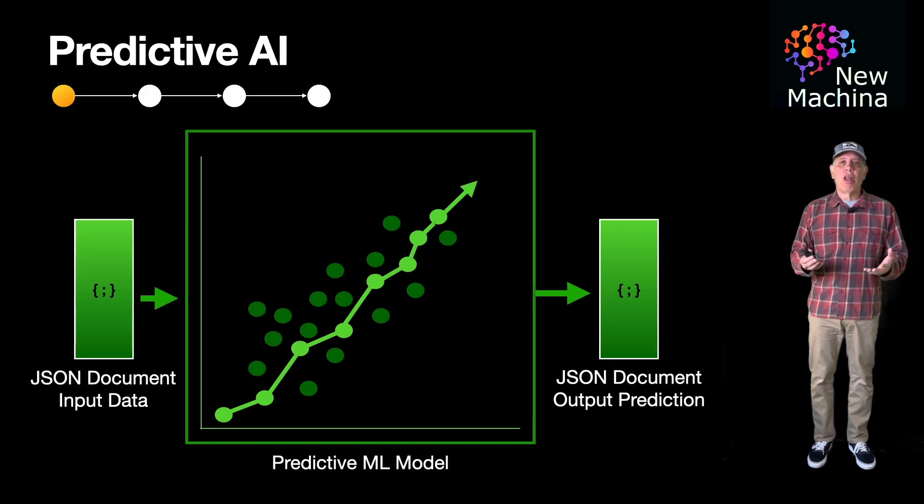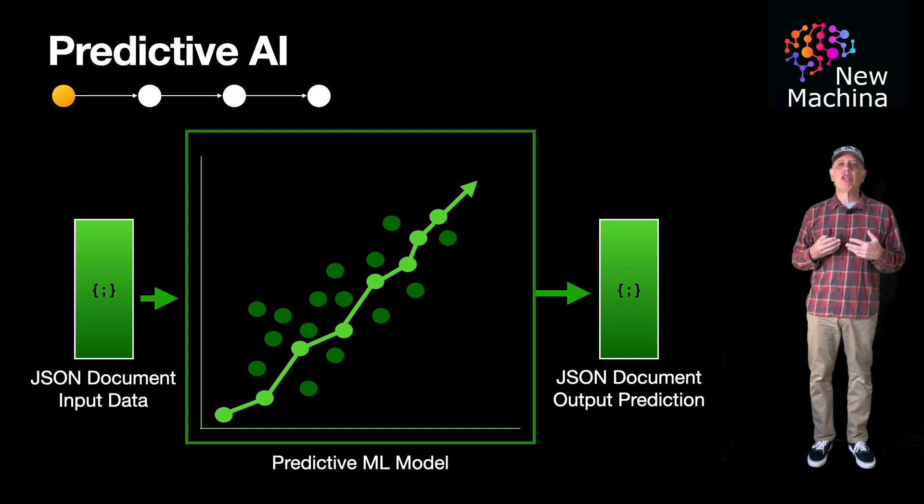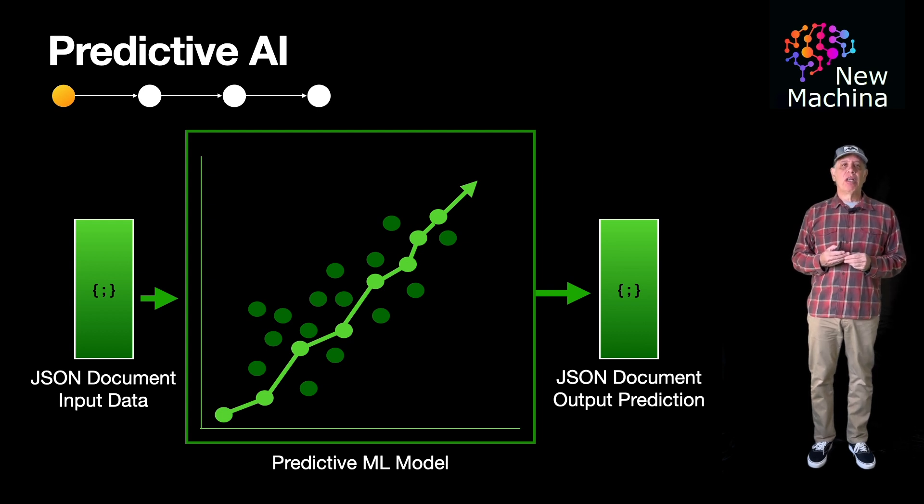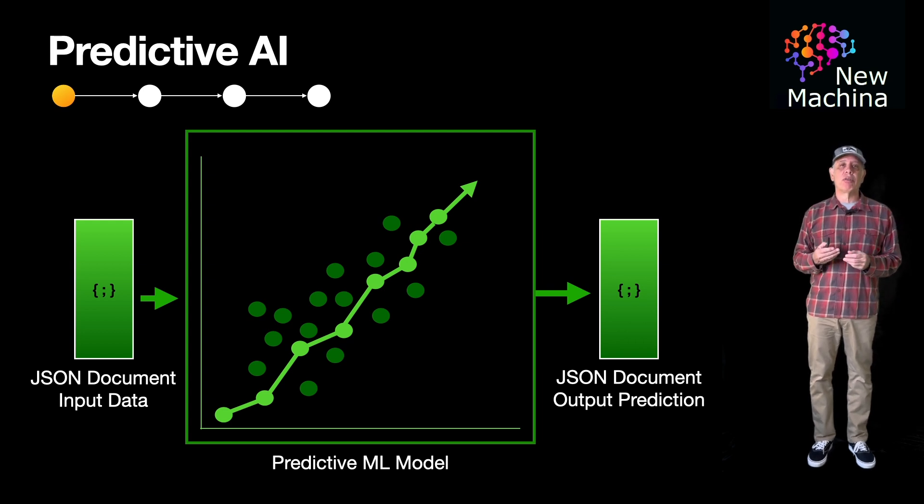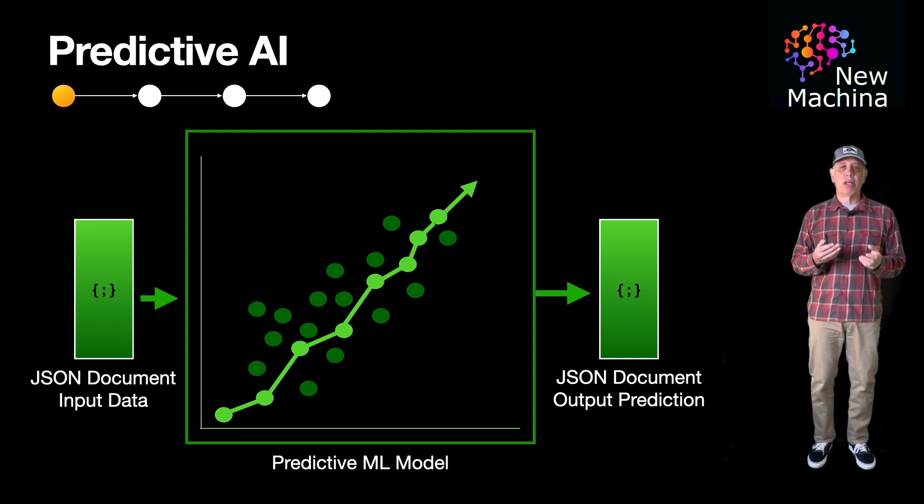Predictive AI was the original AI and has been in industry for decades. Predictive AI, as the name implies, makes predictions or forecasts about future outcomes based on past historical data. Predictive AI models focus on understanding patterns and relationships in the data to make informed predictions.